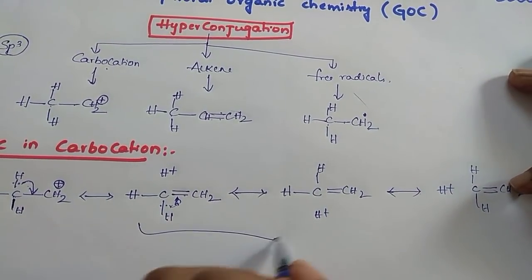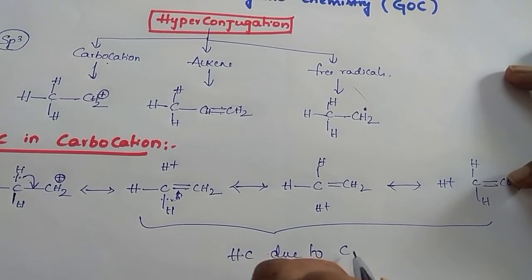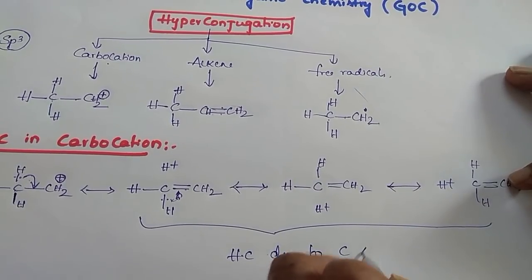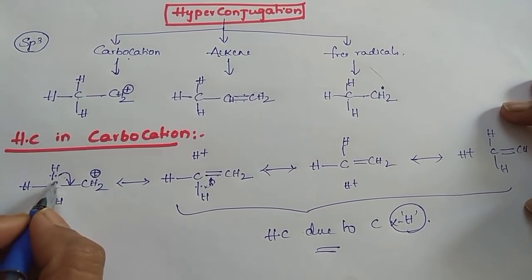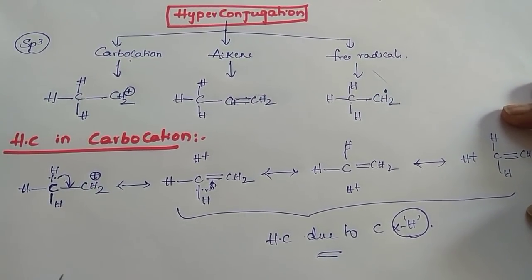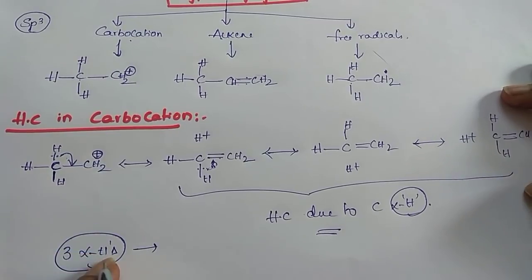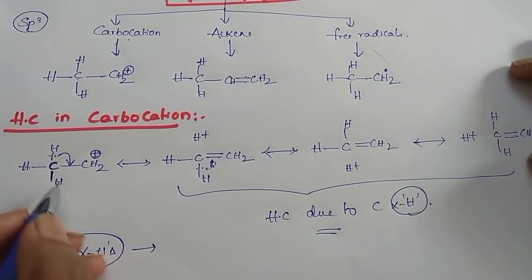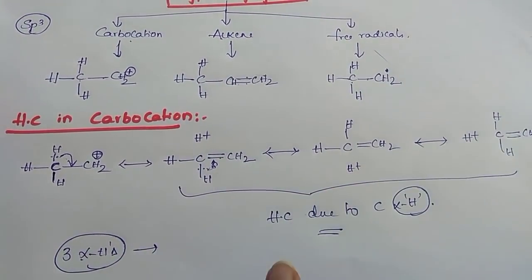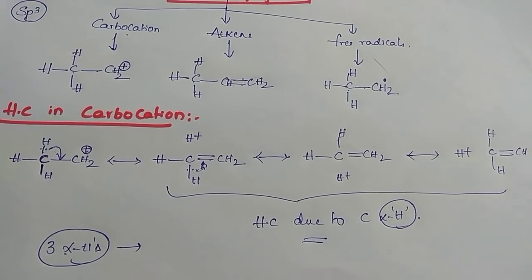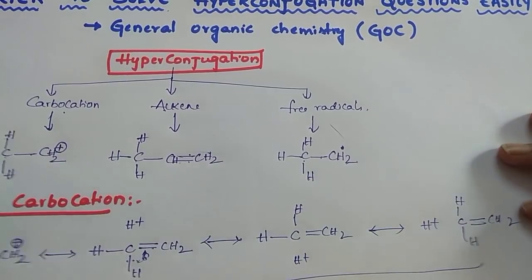These structures are called hyperconjugative structures — one due to each C–H bond. How many alpha hydrogens are there? Here: 1, 2, 3 — three alpha hydrogens. So how many hyperconjugative structures are possible due to alpha hydrogens? Three. The total number of structures is alpha hydrogens plus 1, so total 4. If they ask about structures due to C–H bonds only, the answer is 3.